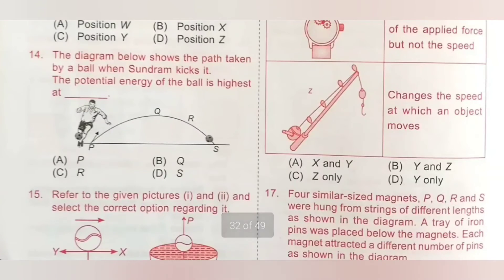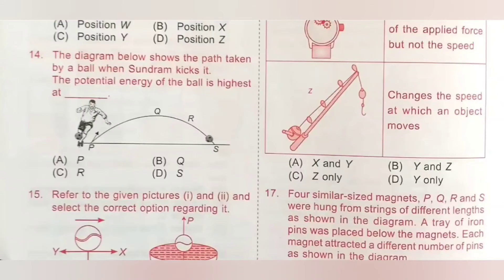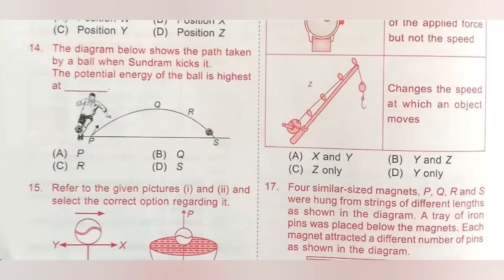Question 14: The diagram shows the path taken by a ball when Sandram kicks it. The potential energy of the ball is highest at dash — A: P, B: Q, C: R, D: S. Using the same reasoning as the previous question, the potential energy is highest at the highest point of the path, which is point Q. Option B is the correct answer.